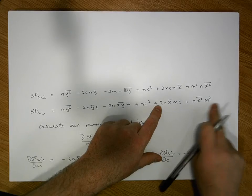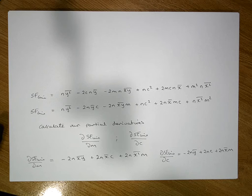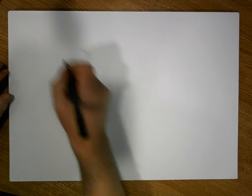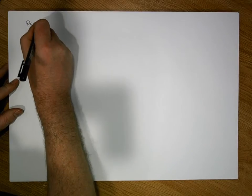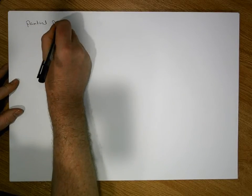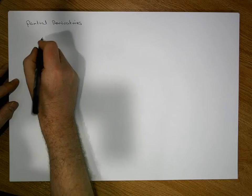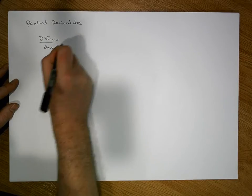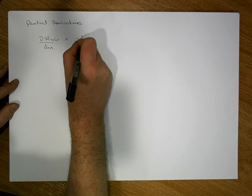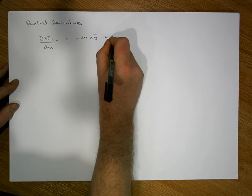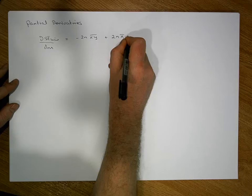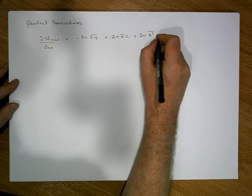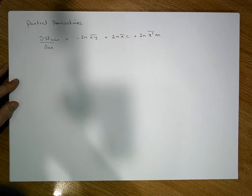This last term is just a constant, so it becomes zero. So our two partial derivatives: the partial derivative of the sum of squared errors of the line with respect to m is equal to minus 2nx̄ȳ plus 2nx̄c plus 2nx²̄·m.